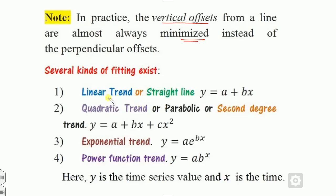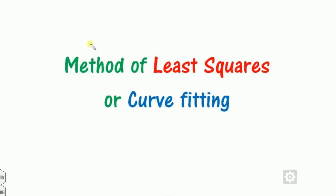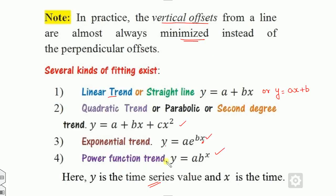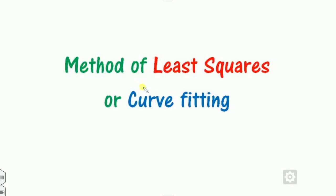Several kinds of methods are there: linear, also called straight line — a plus bx or ax plus b; quadratic, also called parabolic or second degree; exponential; and then so on. You can also use the cubic equation — a plus bx plus cx squared plus dx cubed. y is the time series value and x represents the time. You can use any one of them to fit the curve.